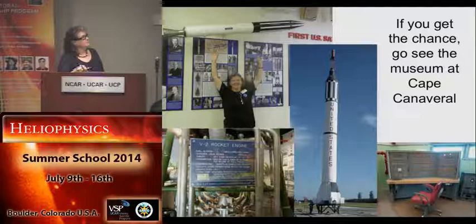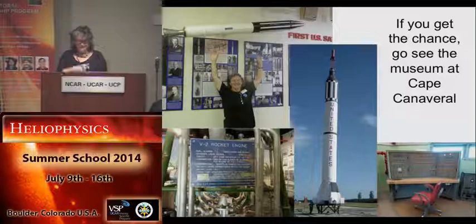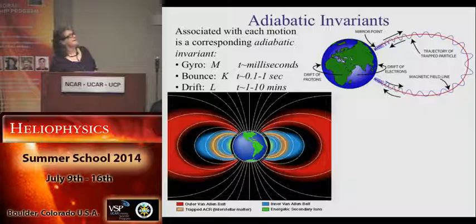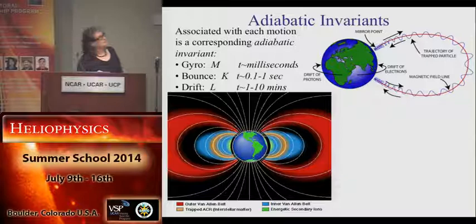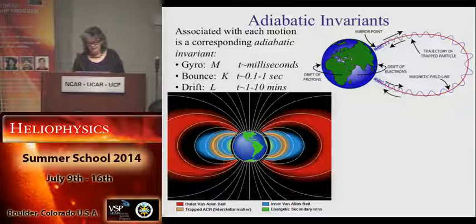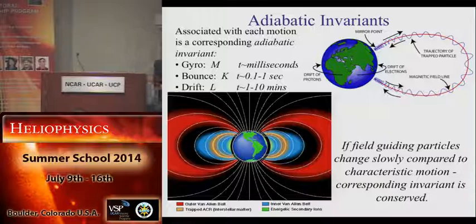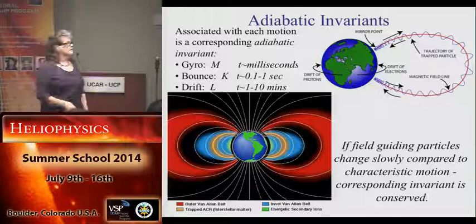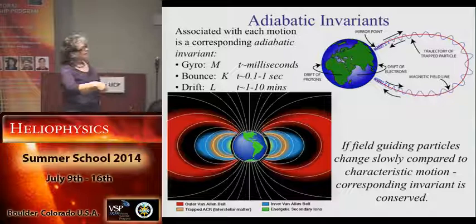Go to Cape Canaveral and check it out and have your picture taken. So let's talk about the radiation belts. Tomasz Kamboshi went through the adiabatic invariants that describe particle motions around the field — bouncing up and down, and then drifting around. These timescales for the Earth are: gyro frequencies are very short, bounce periods a little longer, and then drift periods are as much as minutes. The important point is that if fields vary slowly compared with these gyro, bounce, and drift timescales, the corresponding invariant will be conserved.